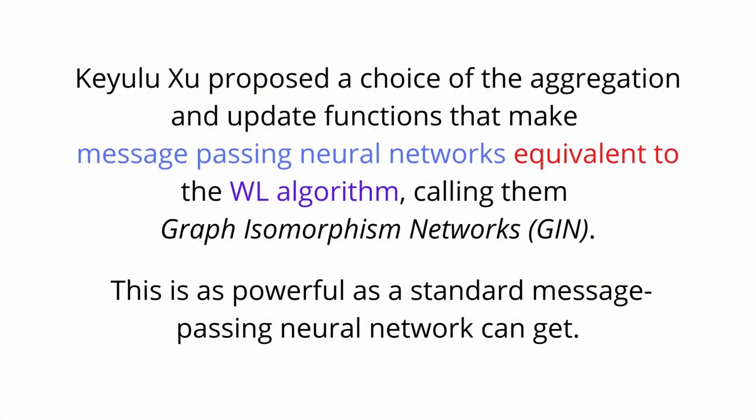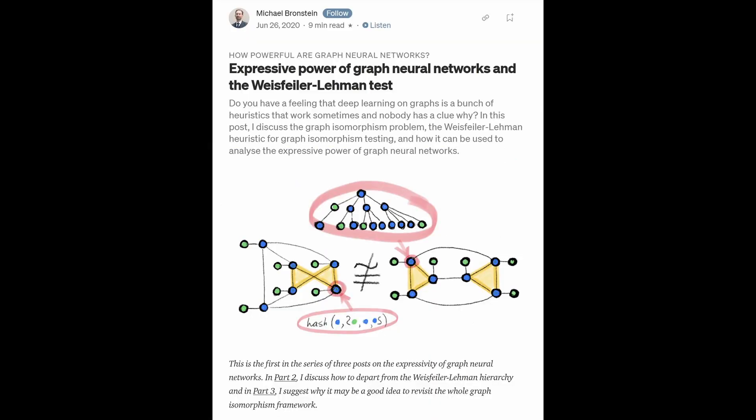Xu et al. proposed a specific choice of aggregation and update function that makes the message passing neural network equivalent to the WL algorithm — this is the GIN. This is as powerful as a message passing neural network can get. If you would like a deep dive into this topic, I recommend the article by Michael Bronstein on the expressive power of graph neural networks and the Weisfeiler-Lehmann test, published on towardsdatascience.com. See you next time.